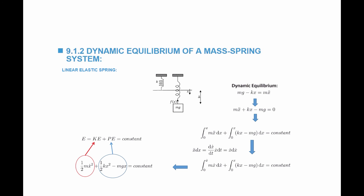So what this equation tells us is that in a dynamic situation the total energy is always constant, and the sum of kinetic energy and potential energy remains equal to a constant.